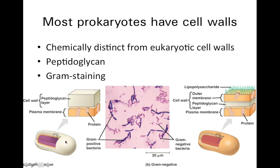So in gram-positives, this peptidoglycan layer is what's facing the environment and what absorbs that gram stain. In gram-negative bacteria, most gram-negative bacteria, they have an additional membrane layer outside of the cell wall.